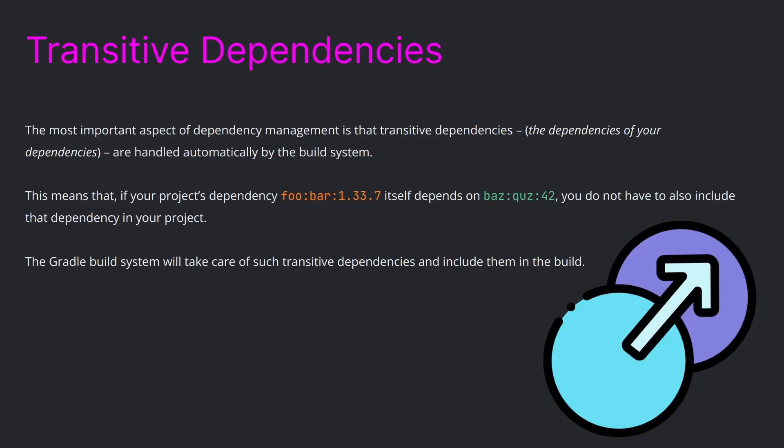The most important aspect of dependency management is that transitive dependencies — the dependencies of your dependencies — are handled automatically by the build system. This means if your project depends on foo-bar version 1.33, which itself depends on buzz-quiz version 42, you do not need to include that transitive dependency in your project. The Gradle build system will take care of it and include it in the build automatically.